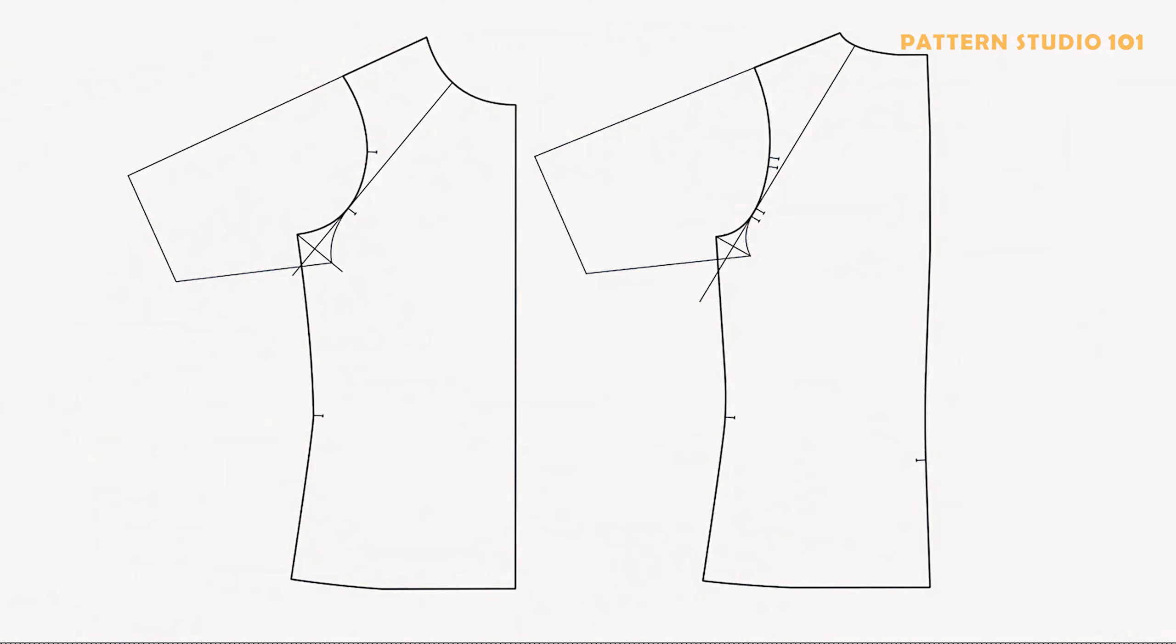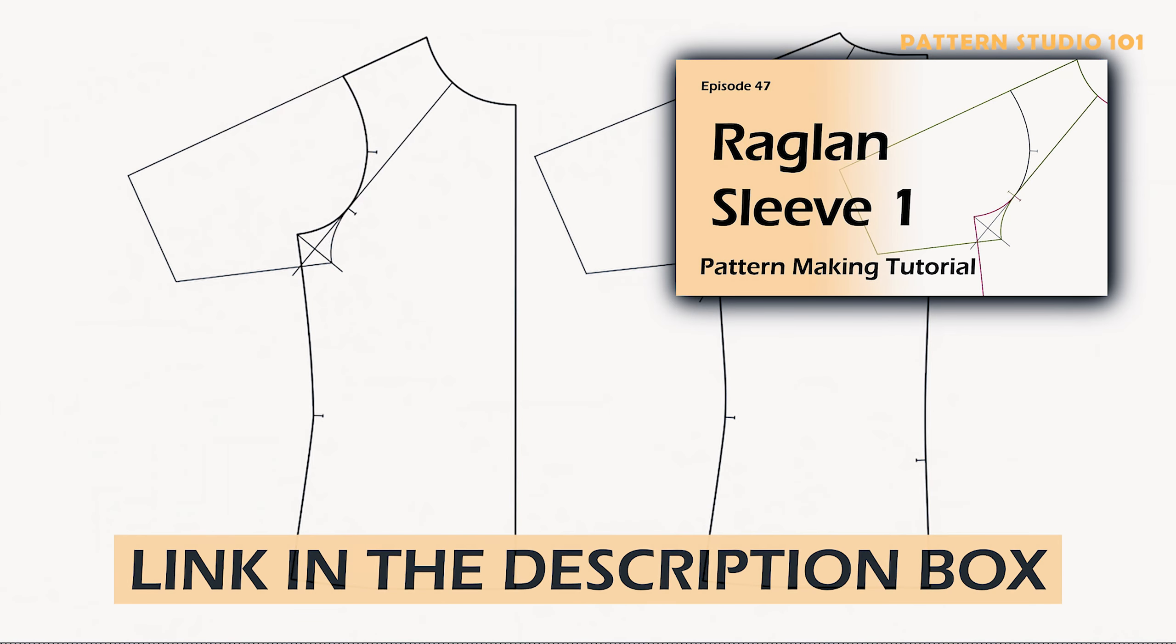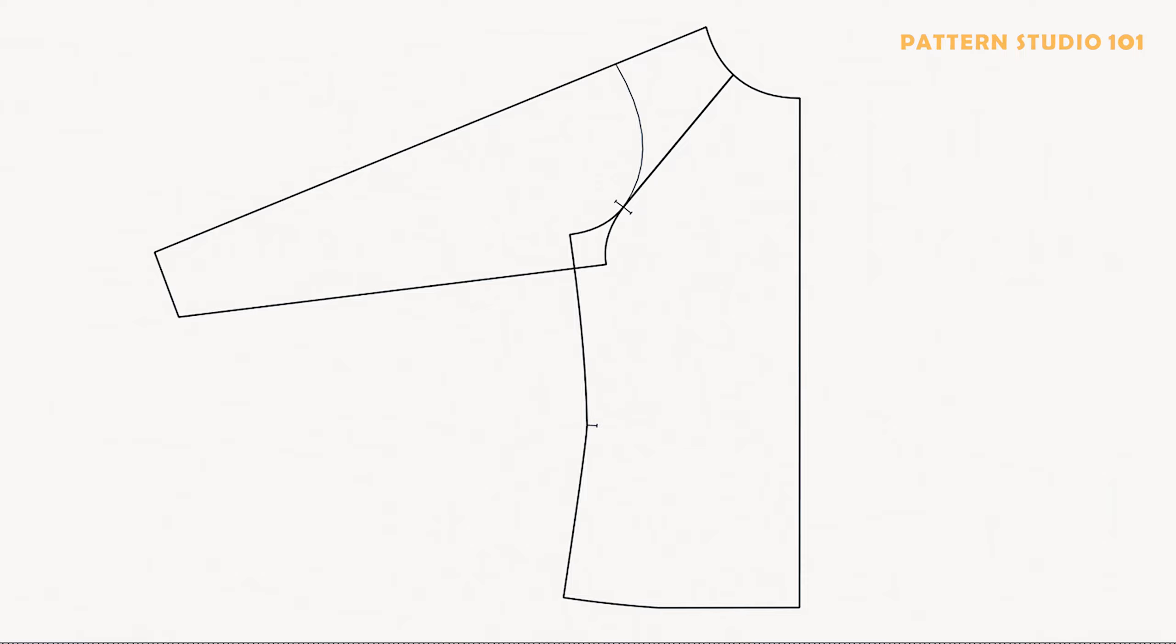This is the raglan sleeve pattern we drafted in episode 47. The link is in the description box. Let's take the front for today's lesson and just make this long sleeve and clean some guidelines so it's easier for you to see the angles.